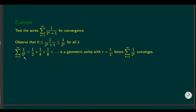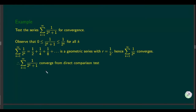Now 1/(2^k) is a geometric series with first term 1/2 and common ratio 1/2. Since the common ratio is 1/2, this geometric series converges. Since 1/(2^k + 1) ≤ 1/(2^k) and 1/(2^k) converges, by the comparison test this series also converges.